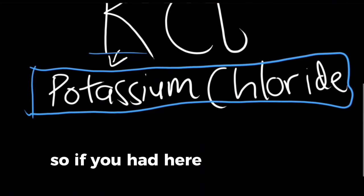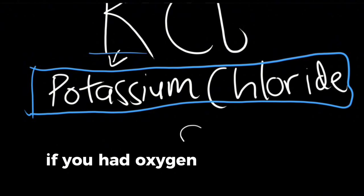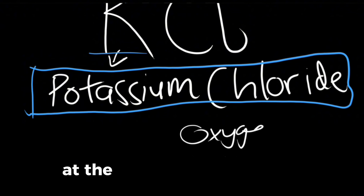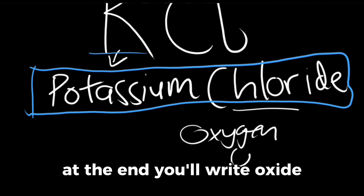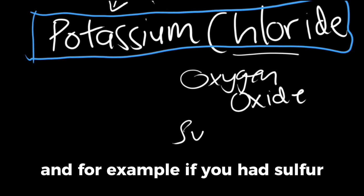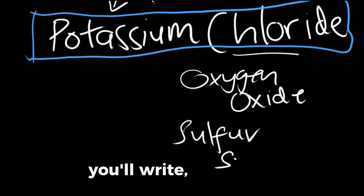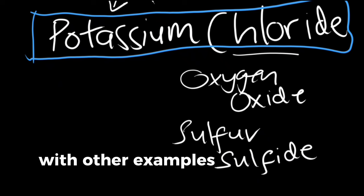So if you had here, for example, instead of chloride, if you had oxygen, then you will write oxide. And for example, if you had sulfur, then you will write sulfide. And so on with other examples.